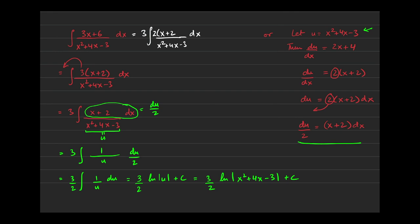Okay, so let's do that. Let's multiply the numerator by 2. But if I do that, I also have to divide the function by 2 as well. Now, the derivative of the denominator is exactly what I have in the numerator. So my answer is 3 halves ln of the absolute value of the bottom, x squared plus 4x minus 3 plus c, which is the exact same thing we had right here.